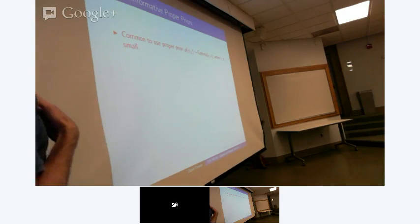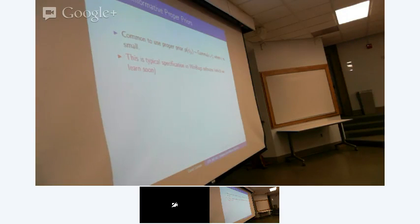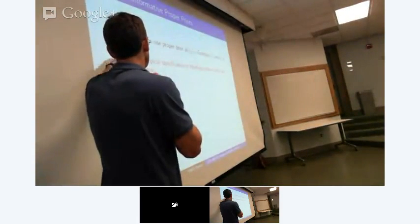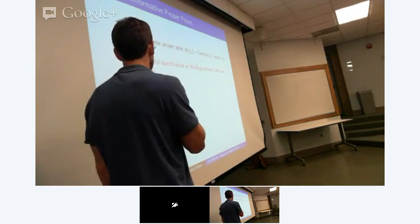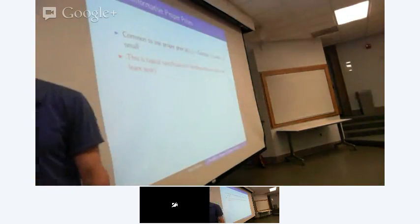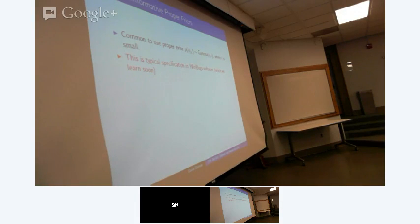It's very common to use Gamma(epsilon, epsilon) priors despite these issues — it's the typical WinBUGS specification that you'll encounter in the labs. WinBUGS is a default software for Bayesian analyses, though it's somewhat slow and can be flaky. Apparently someone at NC State is developing a very fast Java-based alternative to WinBUGS.